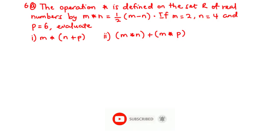Now let's solve question 6a. The operation star is defined on the set R of real numbers by m star n equals 1 over 2 times m minus n. If m equals 2, n equals 4, and p equals 6, evaluate: (i) m star (n plus p), and (ii) (m star n) plus (m star p).